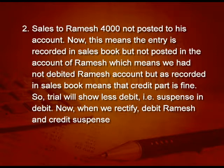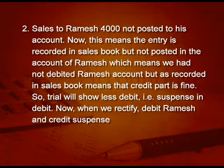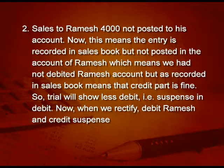Next example: sales to Ramesh 4000 not posted to his account. Not posted means the entry is recorded in the sales book, but not posted in the account of Ramesh — we have not debited Ramesh's account, but the credit part is fine. So the trial will show less debit, and suspense will be in debit. When we rectify, suspense will be credited and Ramesh will be debited. So if the suspense is in debit, you have to credit it when you find the error, and vice versa.